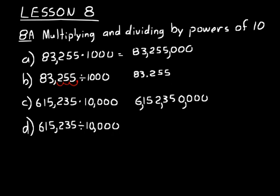6,152,350,000 is what that becomes. Now in D, we divide by 10,000. And so that decimal place moves to the left, four. And we would end up with 61.5235.